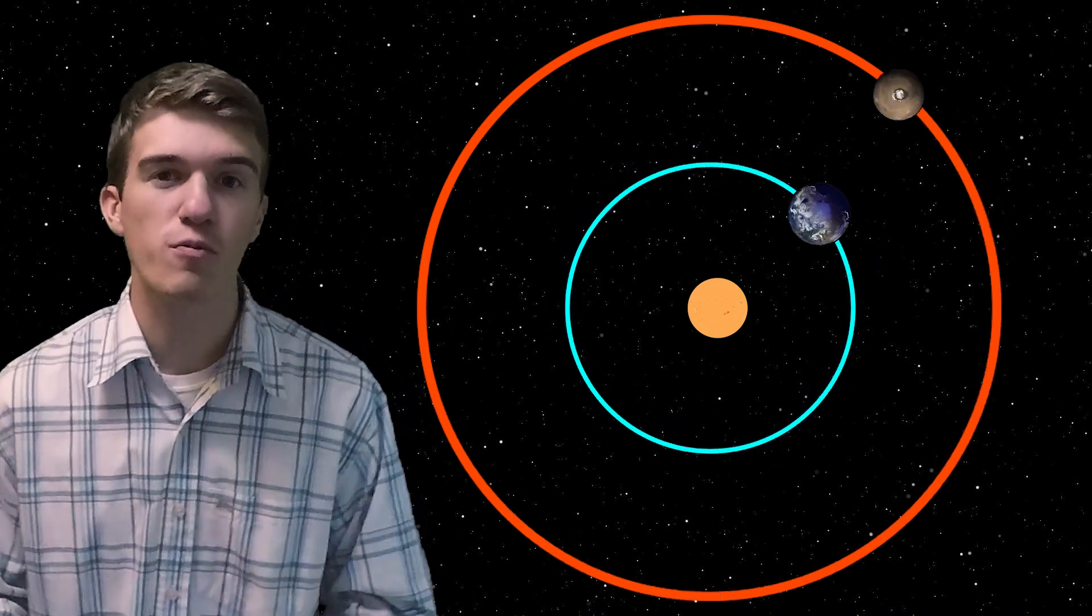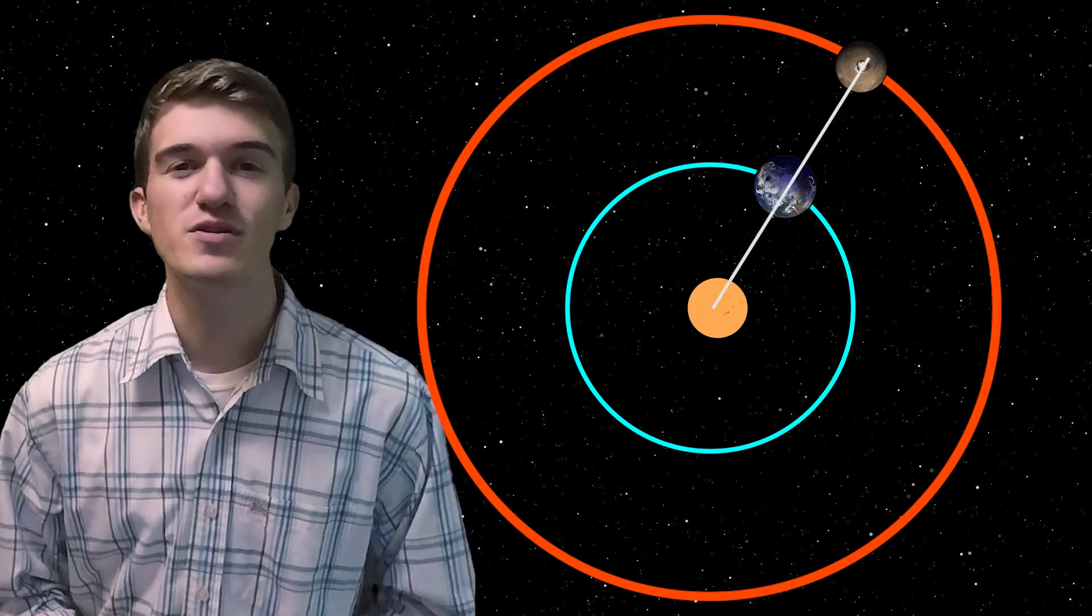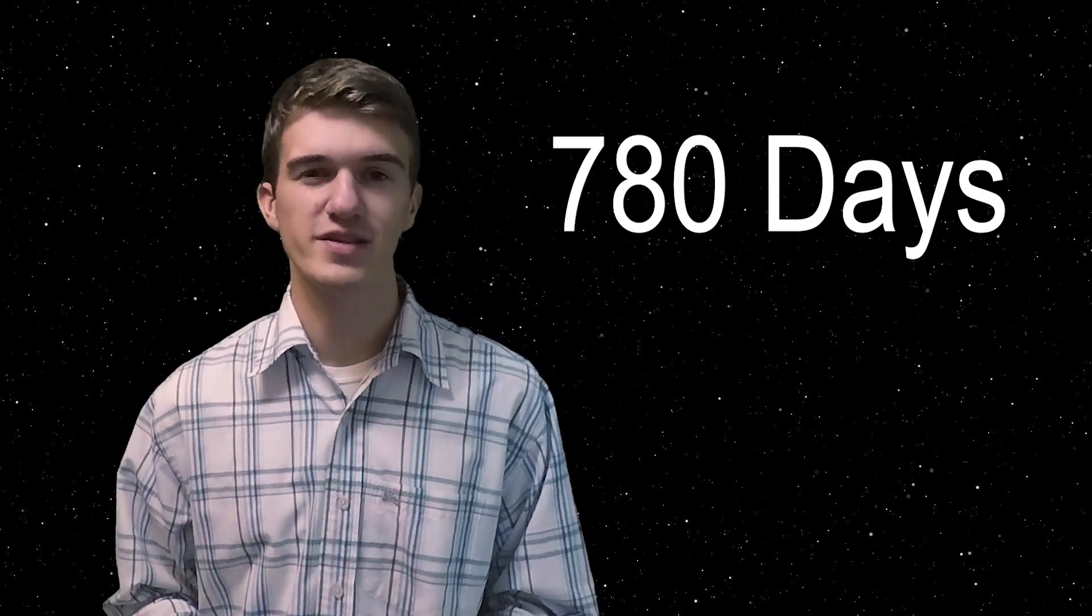So every time Earth passes Mars, that's when Mars Opposition happens. So this happens once every 780 days, meaning that this isn't a once-in-a-lifetime experience.